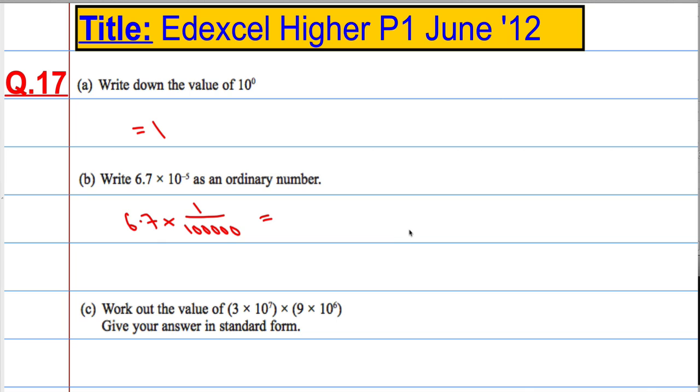So, we're going to have a 6 and a 7, and then I'm going to have 1, 2, 3, 4, so 1, 2, 3, 4, 5, yeah, that's spot on, so 0.000067.